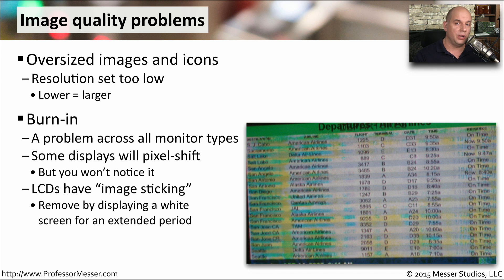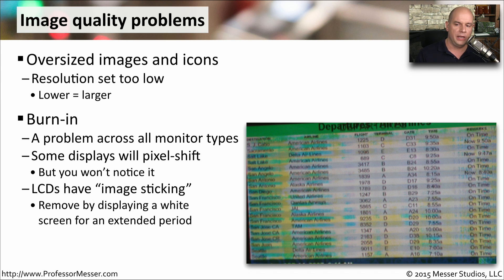One problem that exists across all different kinds of monitors — CRTs, LCDs, plasma, and others — is a burn-in issue. This is when something on the screen is there constantly and eventually that image becomes permanent on the display. Some displays have a function that shifts the pixels after a certain amount of time to avoid burn-in. LCDs also have this problem with images sticking on the screen for extended periods, and you may want to try displaying a completely white screen on your LCD to help that image fade away.